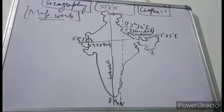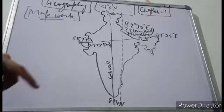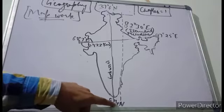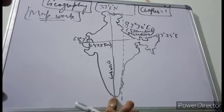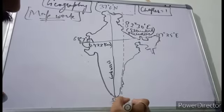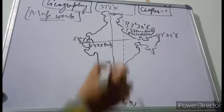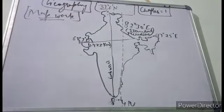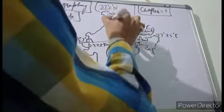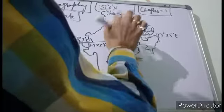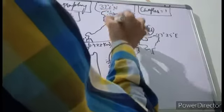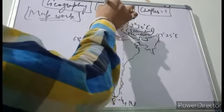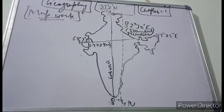The next topic we will discuss is the latitudinal extent of India. The latitudinal extent of India is from 8 degrees 4 minutes North — you can see this point here — to 37 degrees 6 minutes North. This straight line passing here marks the latitudinal extent of India at 37 degrees 6 minutes North.